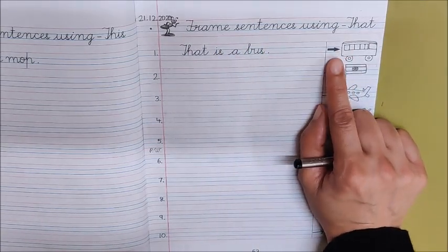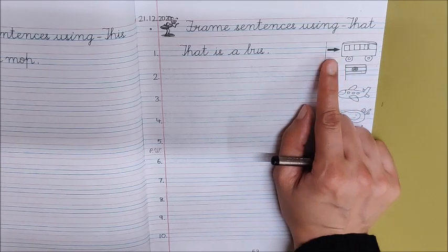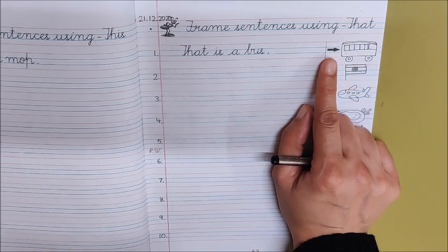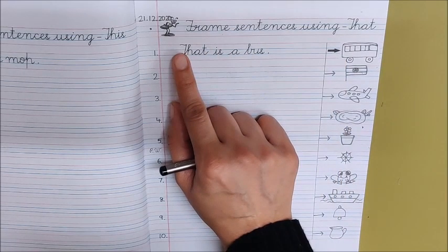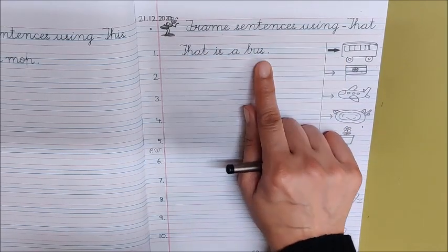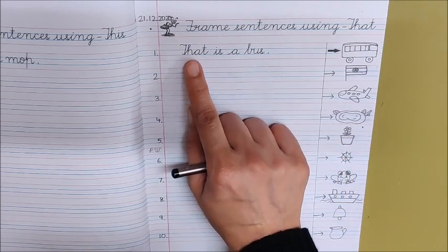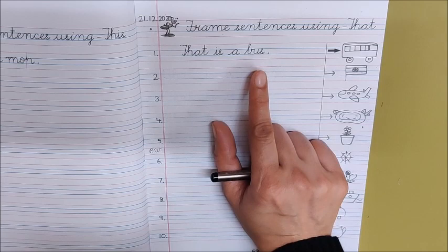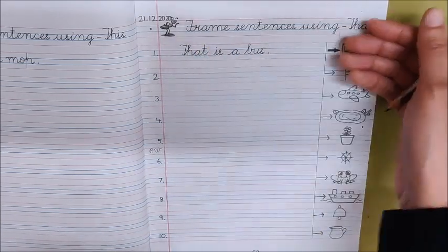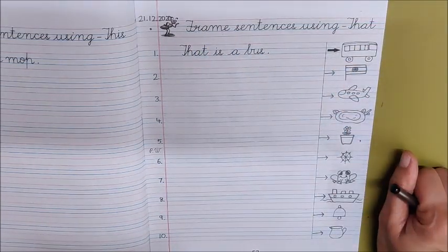Look at the first picture. Make a sentence on it using that. That is a bus. So here the sentence is already written. Read it. That is a bus. Now children like this you have to make sentences on all these pictures.